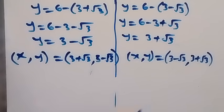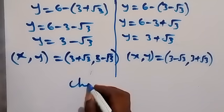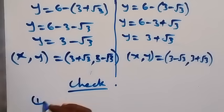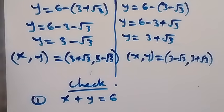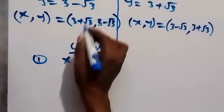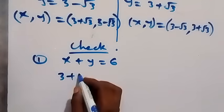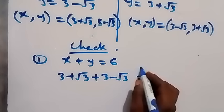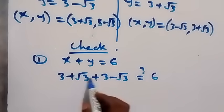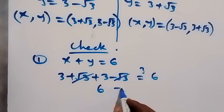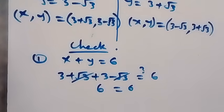Let's verify using equation one: x plus y equals six. Taking the first solution, (three plus root three) plus (three minus root three) equals six. The root three terms cancel out, and three plus three gives six, which equals six. This checks out.